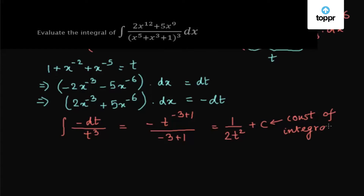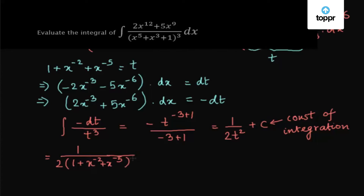So substituting the value of t from the above equation, where t is equal to 1 plus x to the power minus 2 plus x to the power minus 5, we get the integral to become 1 upon 2 into 1 plus x to the power minus 2 plus x to the power minus 5, whole square, plus c.